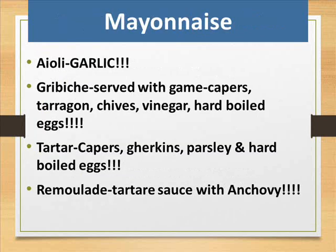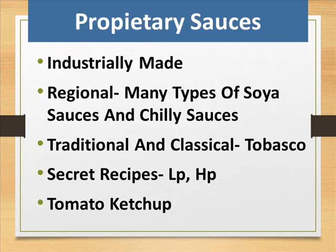Mayonnaise derivatives: Aïoli — garlic; Gribiche — served with game, capers, tarragon, chives, vinegar and hard-boiled eggs; Tartare — capers, gherkins, parsley and hard-boiled eggs; Rémoulade — tartare sauce with anchovy.